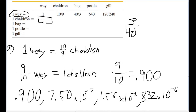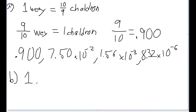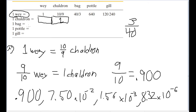Part B is effectively the same thing, only instead of filling out the way column, now we're asked to fill out the chaldron column. Things get a little trickier, but it's still roughly the same general method of conversion. First, notice that one chaldron equals how many chaldrons — that's obviously going to be one. The diagonal of this entire chart is going to be one all the way through, since one bag equals one bag, one pottle equals one pottle, and one gill equals one gill.